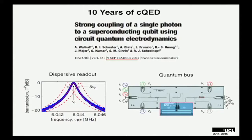Circuit QED has been around for just over 10 years, and in the context of qubits it's interesting for a number of reasons. In particular, in the dispersive regime where the qubit and cavity frequencies are detuned, you have a qubit state-dependent shift of the cavity resonance, and so by probing the transmission through the cavity you can do readout on the qubit. Additionally, if you place a number of qubits along the cavity, the cavity can act as a quantum bus and mediate interactions between distant qubits.